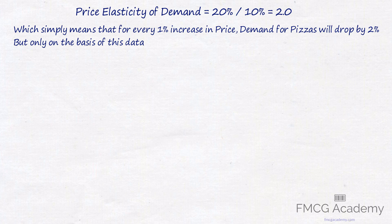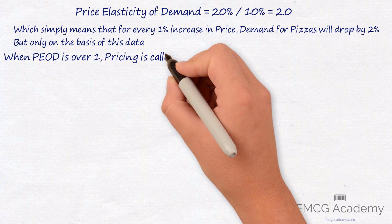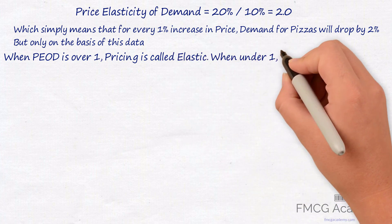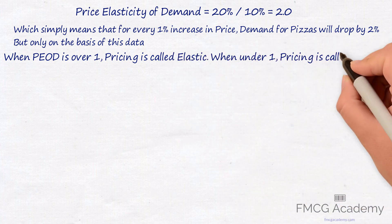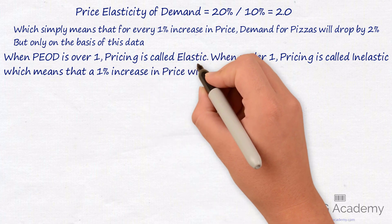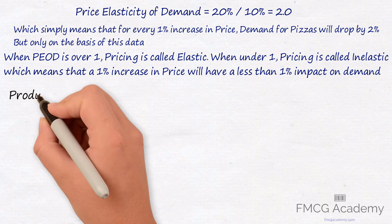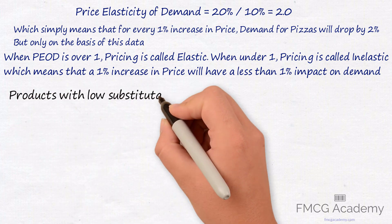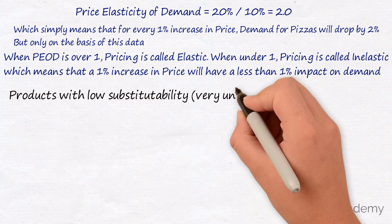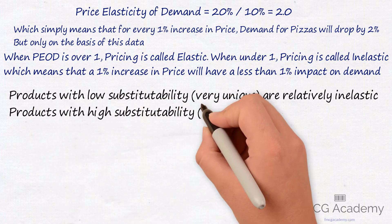When price elasticity of demand is over 1, pricing is called elastic, as we saw in the pizzas example. When price elasticity of demand is under 1, pricing is inelastic, which means that a 1% increase in price will have a less than 1% impact on demand. Products with low substitutability are relatively inelastic, while products with high substitutability are relatively elastic.